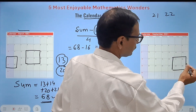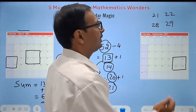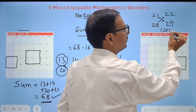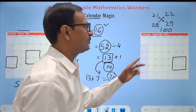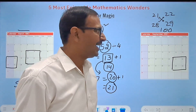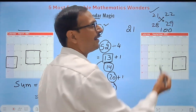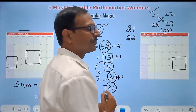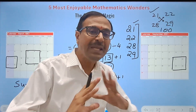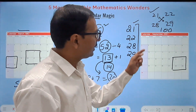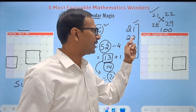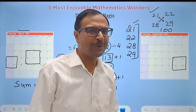Let's take another example using September 2001. Suppose they took 21, 22, 28, and 29. The sum is 100. Subtract 16 to get 84, then divide by 4 to get 21 — the first number. Then 21 + 1 = 22, 21 + 7 = 28, and 29. No pen and paper needed — just subtract 16, divide by 4 to get the first number, then add 1, 7, and 8 to get the rest.